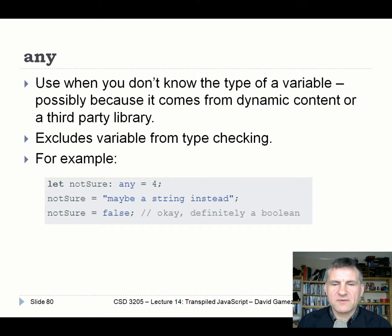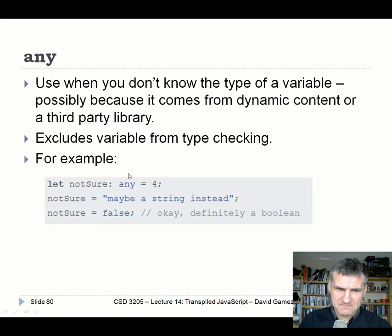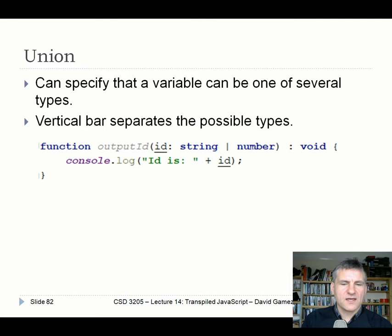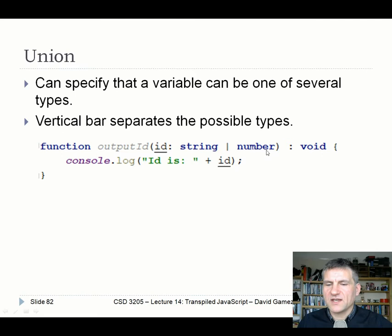We can also have the any type — if you don't know the type of a variable because you're working with legacy code or a third-party library, any tells TypeScript not to check it and lets you assign anything to it. Void is mainly used for functions that don't return anything. We can also combine types using the pipe operator: for example, an ID that might be a string or a number, but can't be a boolean or a class.